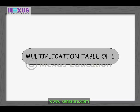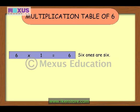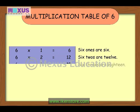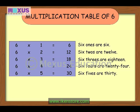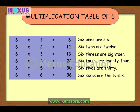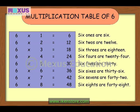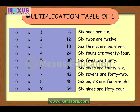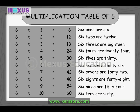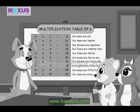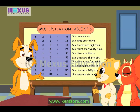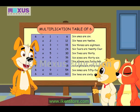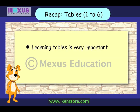We come to the last one now — the multiplication table for the number 6. Ready? Yes, Busta! 6 ones are 6, 6 twos are 12, 6 threes are 18, 6 fours are 24, 6 fives are 30, 6 sixes are 36, 6 sevens are 42, 6 eights are 48, 6 nines are 54, 6 tens are 60.